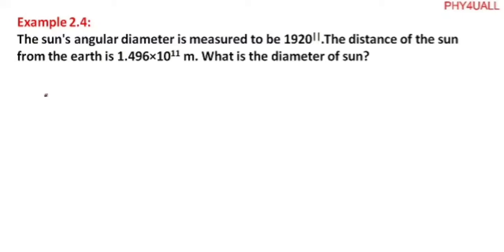Hi friends, let's discuss example 2.4. The sun's angular diameter is measured to be 1920 seconds. The distance of the sun from the earth is 1.496×10¹¹ meters. What is the diameter of the sun?